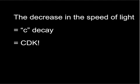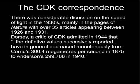Since then, scientists have made many measurements of the speed of light, which they denote as C in their formula. As it has decreased, we use the abbreviation CDK. What the scientists discovered was that these measurements were continually decreasing as the years went by, and this generated considerable correspondence in scientific journals, in particular the prestigious journal Nature in England.